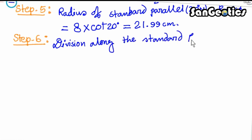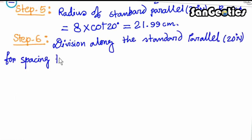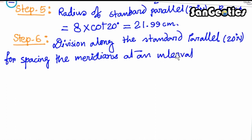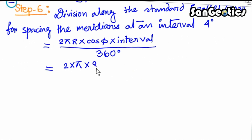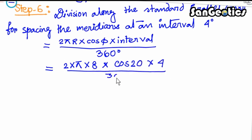The final step is division along the standard parallel for spacing the meridians at an interval of 4 degrees. The formula is: (2π × r × cos(φ) × interval) / 360° = 0.52 cm.